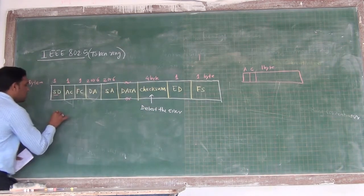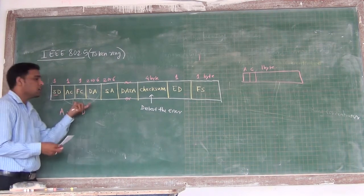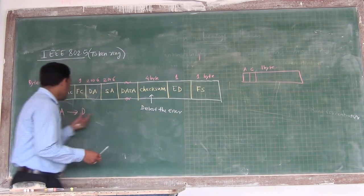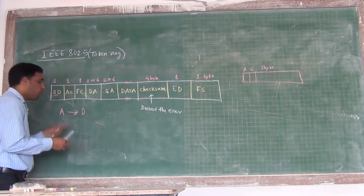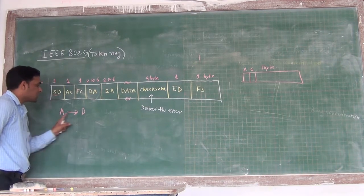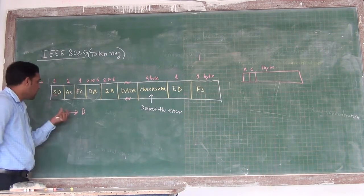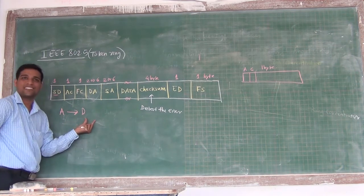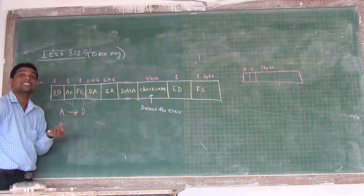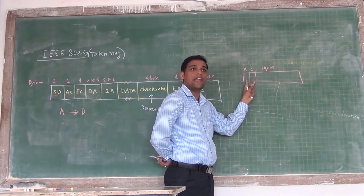Now suppose station A wants to transmit a frame to station D. A prepares the frame and retransmits it to the next station. The token is forwarded. When the frame reaches D, D will accept it and forward it to the next station. So the question is: who will terminate the frame, and how does A know whether its frame was successfully delivered? These two bits — A and C — indicate the status of the frame.